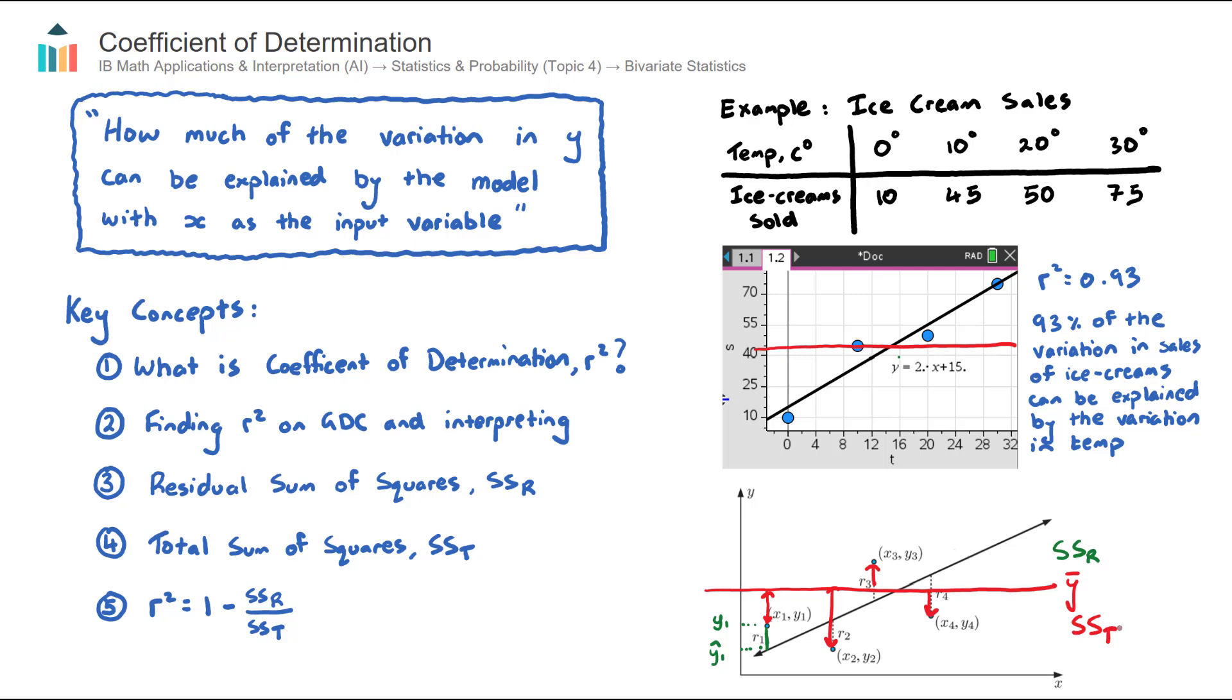So in terms of interpreting what the SSR value, the size of that number, whether it's small or big, we compare it against the SST. And actually the R squared value can be found by this calculation here, 1 subtract the SSR on the SST.